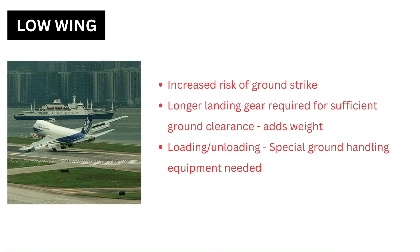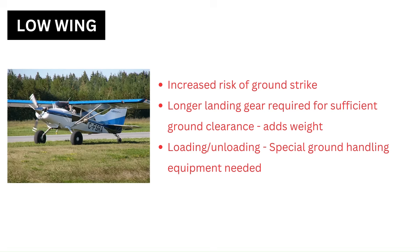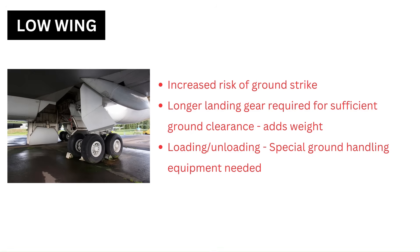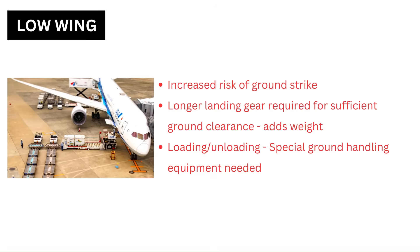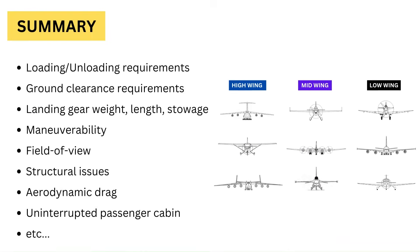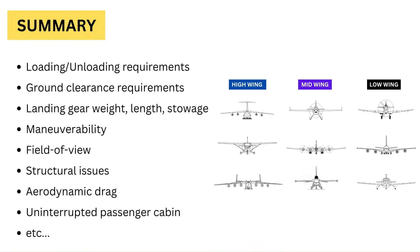A low position of the wing may increase the risk of an accidental ground strike when operating off unprepared fields. More bush planes are of the high-wing configuration than the low-wing. As the fuselage must be placed an adequate distance above the ground for propeller and engine clearance, longer landing gears are required, which adds weight. Usually, special ground handling equipment is necessary for loading and unloading, which is why such designs mostly operate from established airfields. In summary, we can see that a lot of things need to be considered while selecting the wing vertical location.